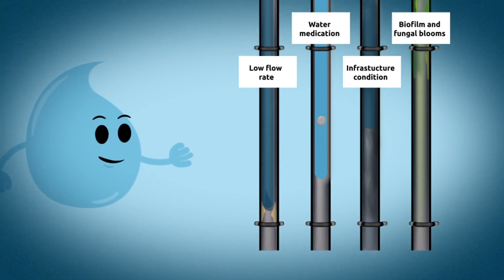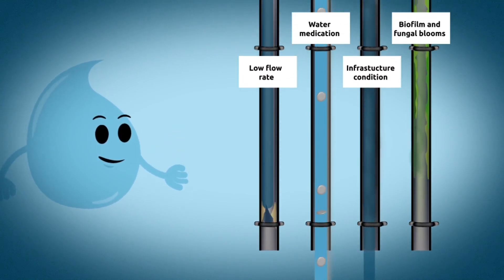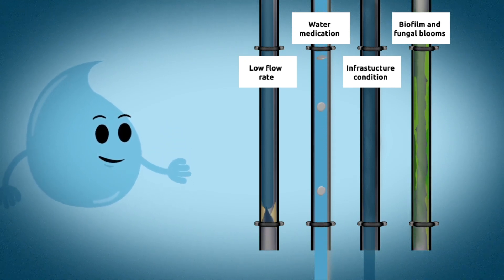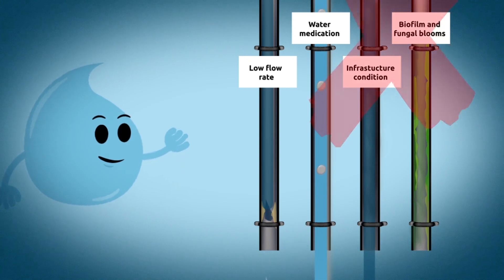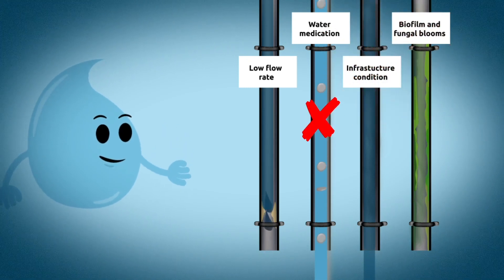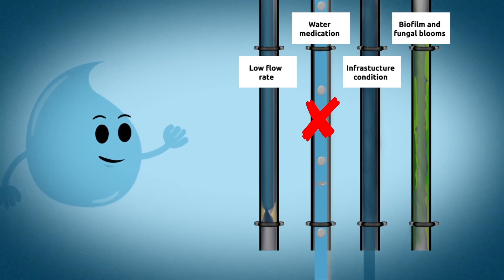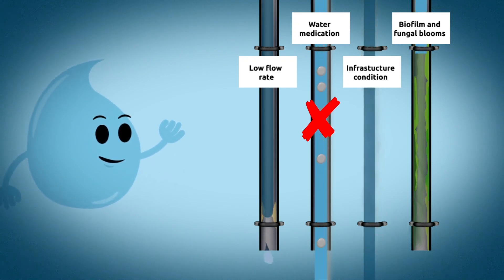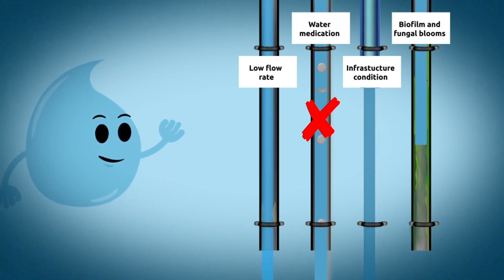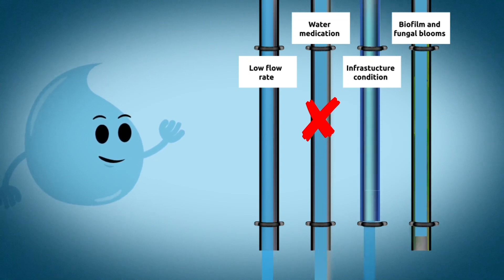A few other things to consider when acidifying water include water flow rates, medications, infrastructure, fungal blooms and your cleaning regime. Always check with your supplier before adding any medication to acidified water, as they can be incompatible. To reduce the chances of inadequate flow rates and algal blooms, water systems need to be cleaned. Effective cleaning can be achieved via a shock treatment before a new batch or through regular control throughout.